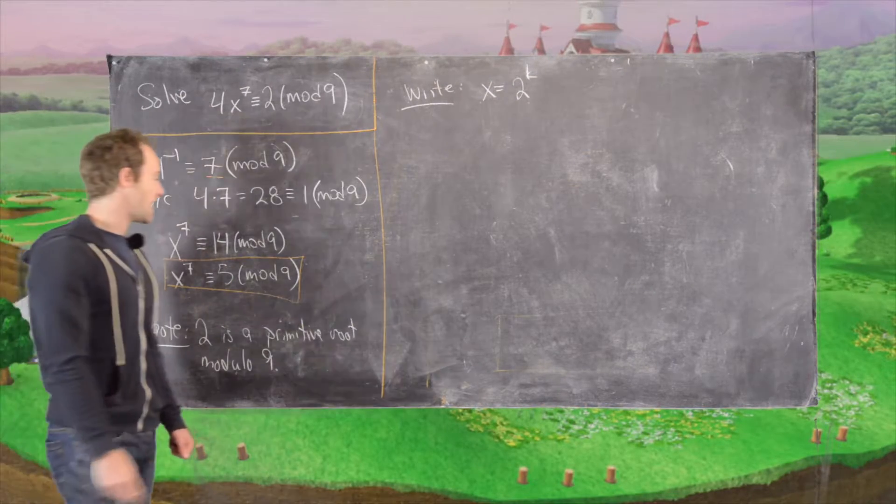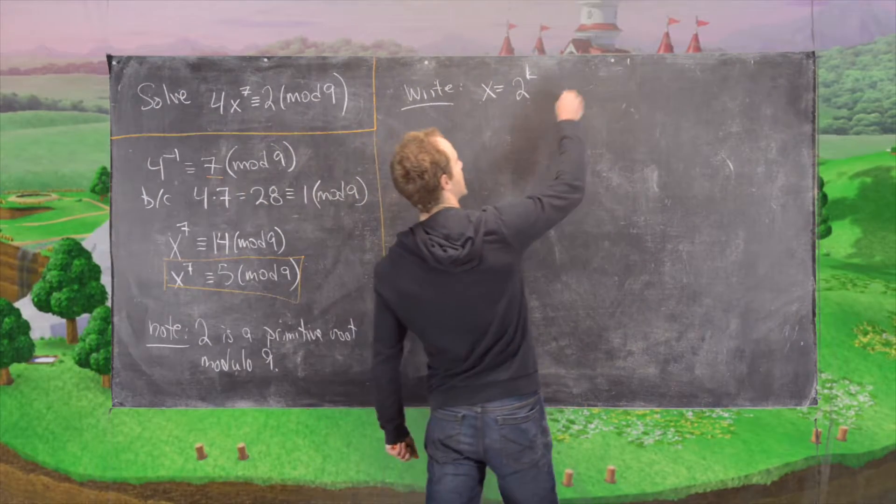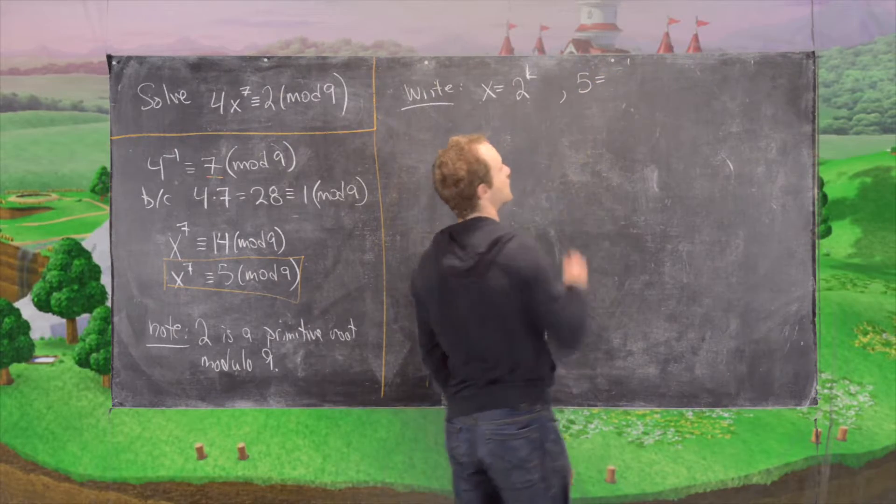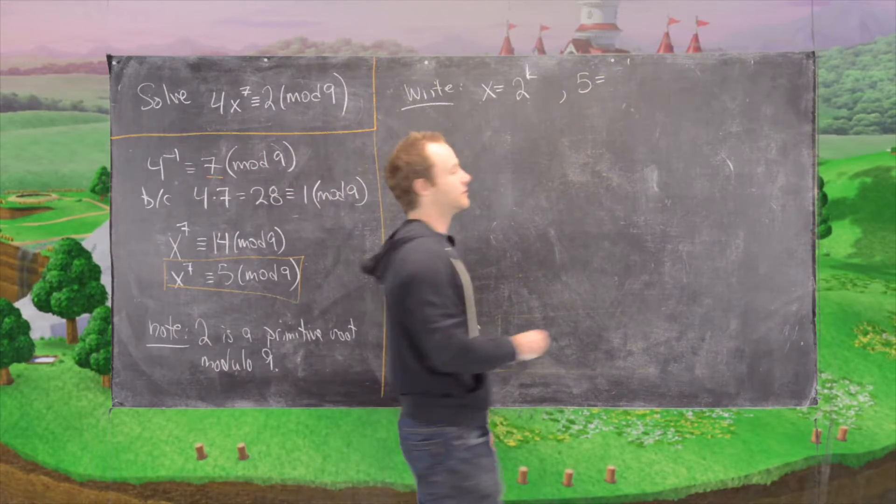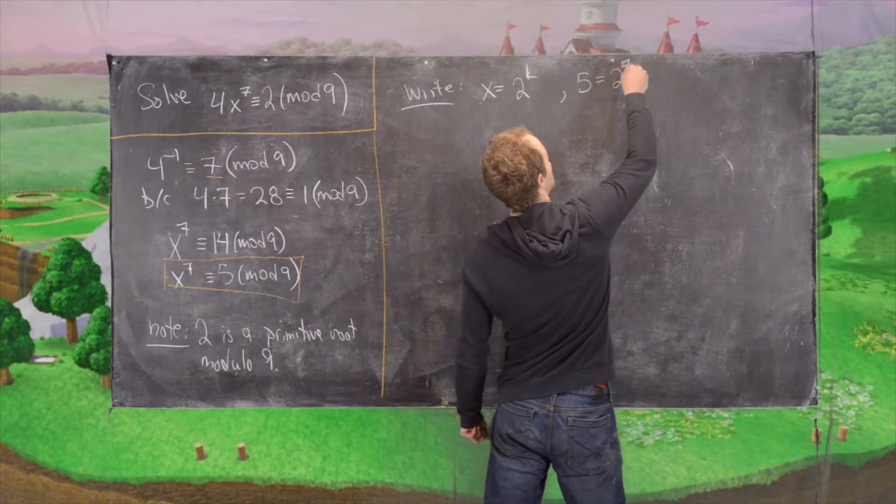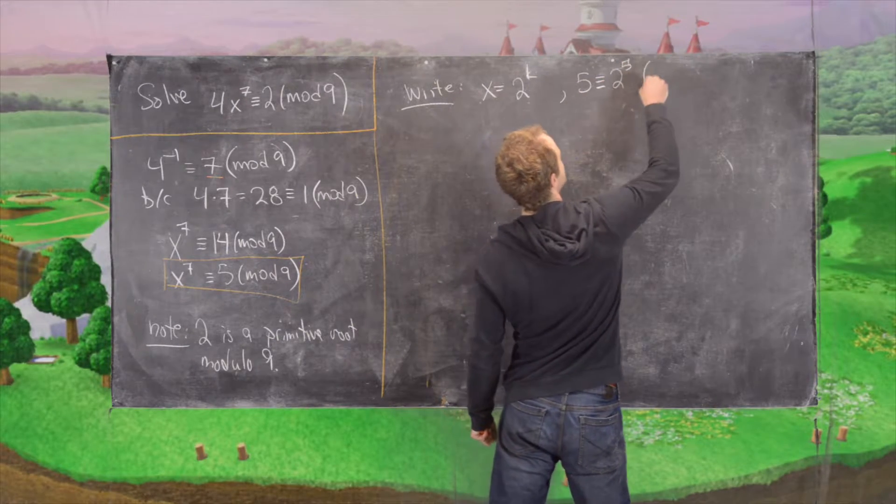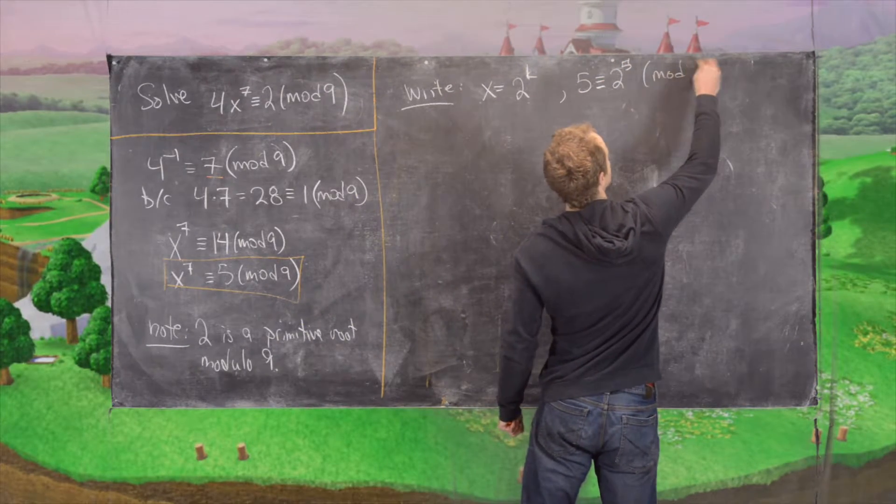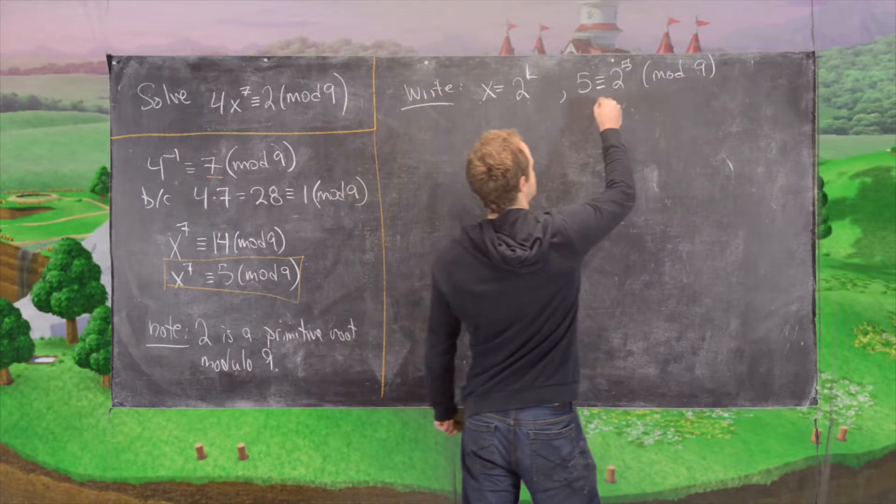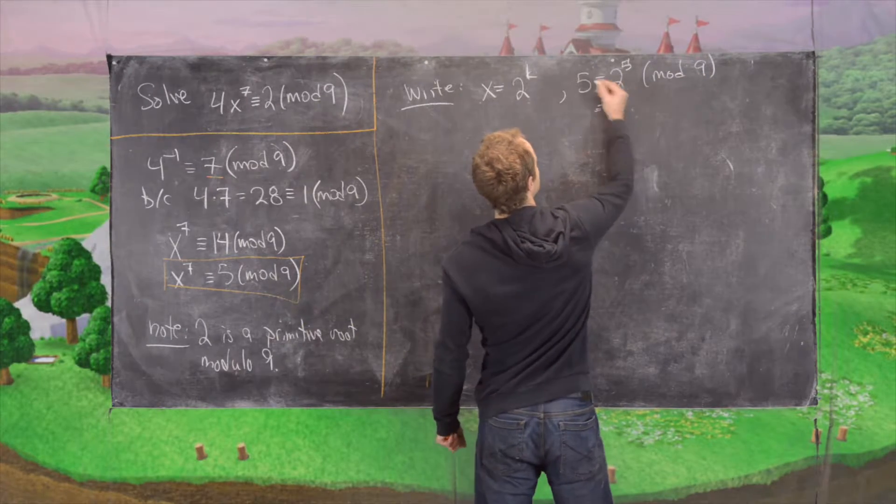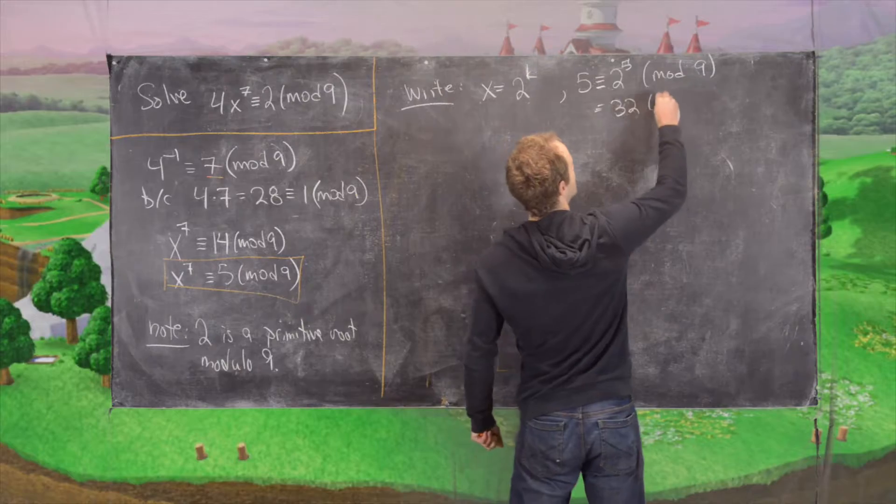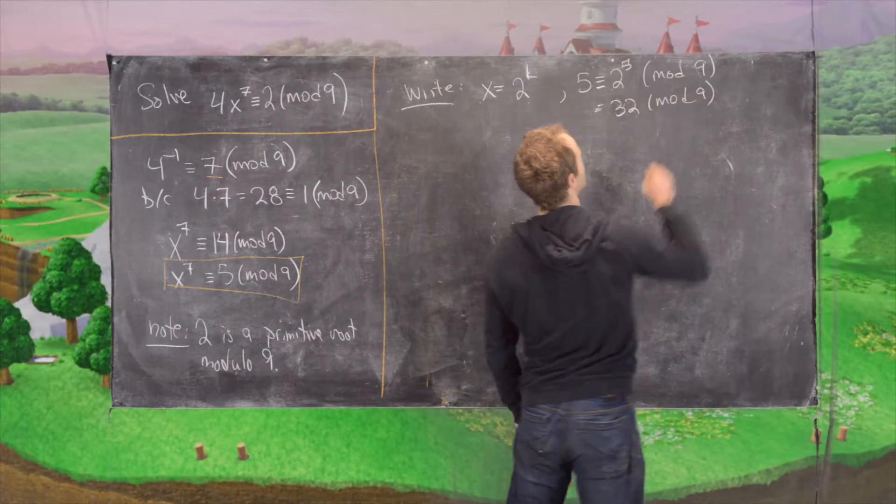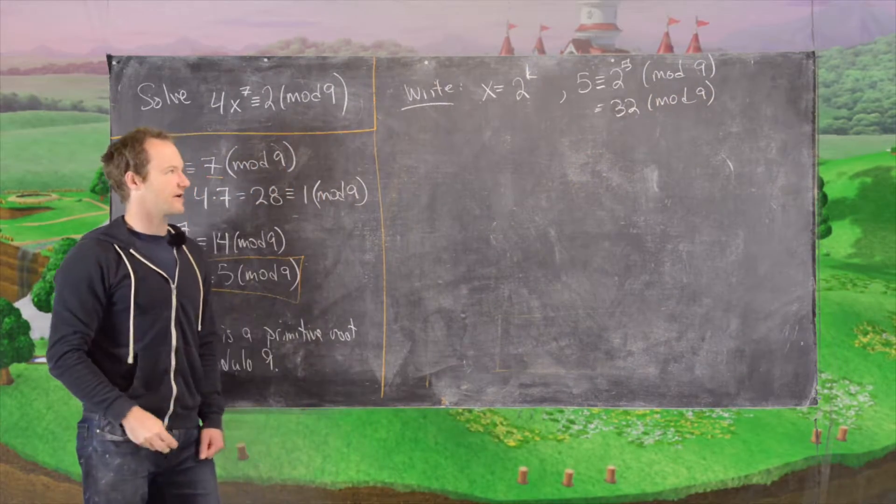And then we'll write 5 as 2 to something as well. So 5, you can check that this is equal to 2 to the 5, and I should say congruent to 2 to the 5 mod 9, because this is 32 mod 9 and 32 is 5 more than 27.